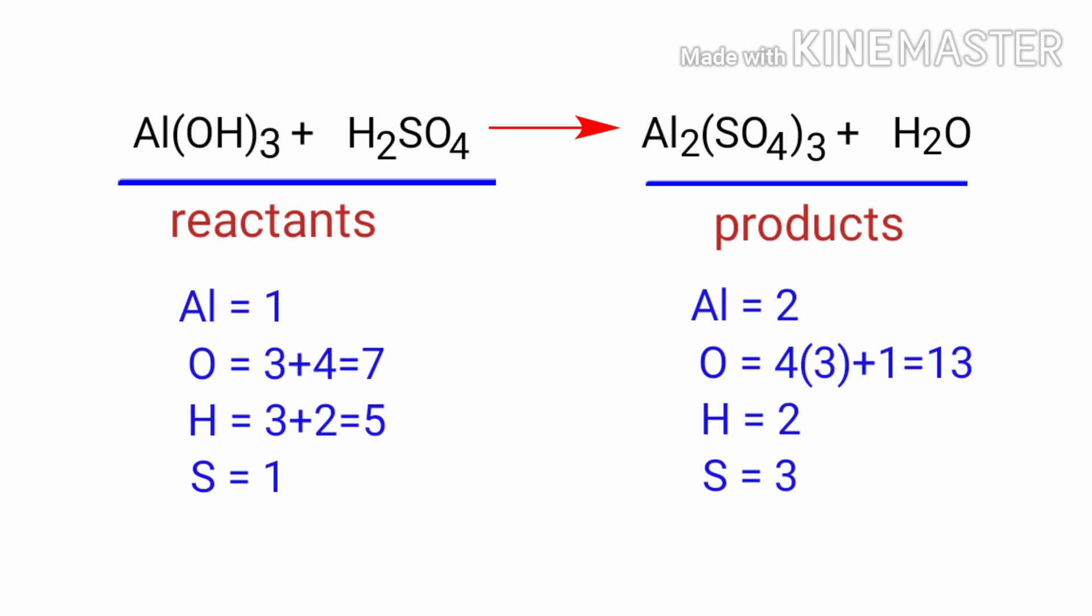If you look at this equation, the equation is not balanced. On the reactants side, there are one aluminum atom, seven oxygen atoms, five hydrogen atoms, and one sulphur atom present. On the products side, there are two aluminum atoms, thirteen oxygen atoms, two hydrogen atoms, and three sulphur atoms present. The number of atoms are not balanced on both sides.